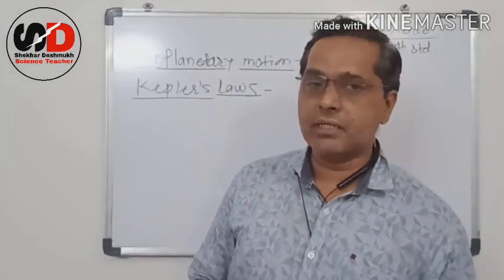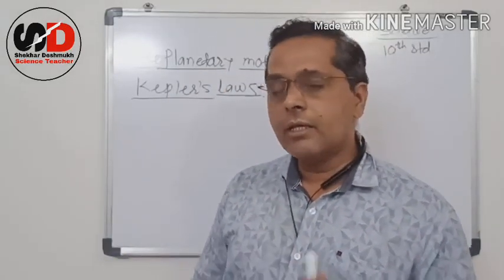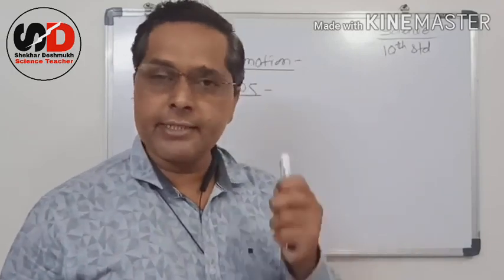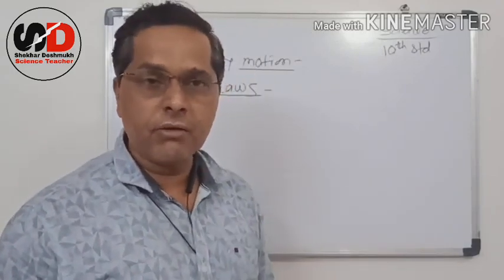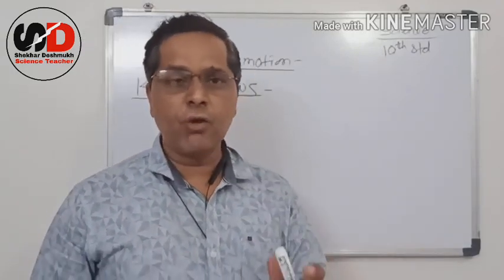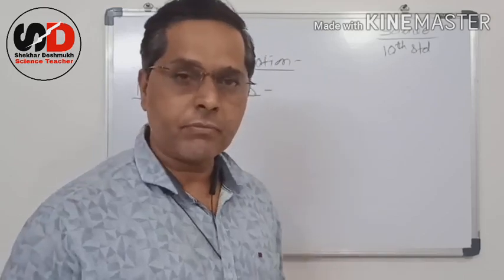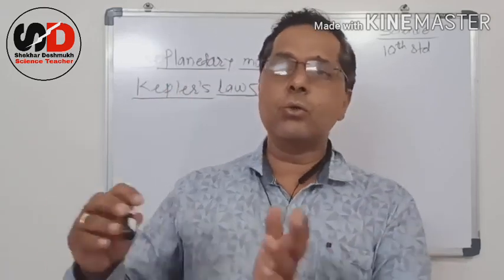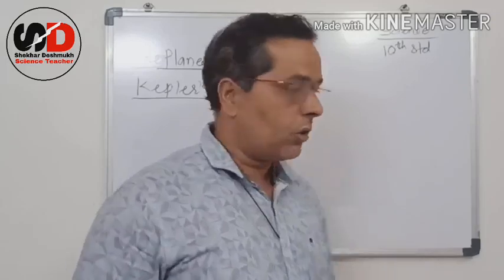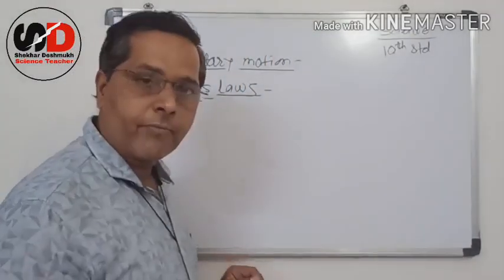So according to Kepler's first law — the orbit of a planet is an ellipse with the Sun at one of its foci. Now let us go towards the second law — Kepler's second law.